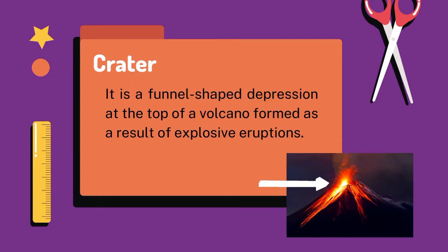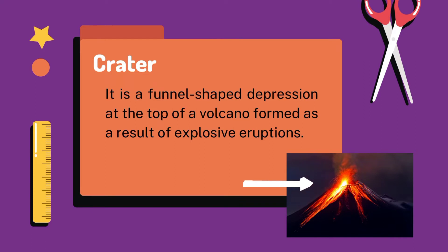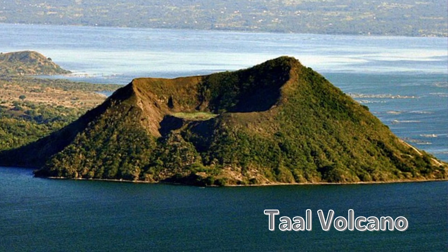Speaking of crater, a crater is a funnel-shaped depression at the top of a volcano formed as a result of explosive eruptions. It is the mouth or the opening of a volcano. We have here the Taal Volcano located in Batangas. This volcano has many craters — not just one, two, or three, but 47 craters.